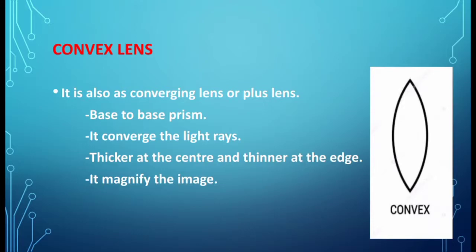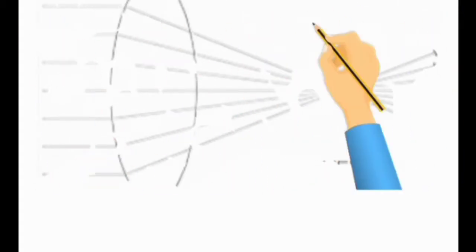Next, convex lens. The convex lens is a base-to-base prism. If we cut the convex lens, we get two prisms; by joining the two prisms at their bases, we get a convex lens — that's why it is called a base-to-base prism. When light rays enter through the convex lens, they converge, so it is called a converging lens. The convex lens is thicker at the center and thinner at the edge, and we get a magnified image. Convex lens is also known as a plus lens.